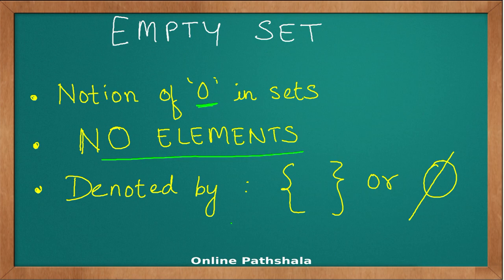And mathematically, in set theory, it is denoted by either having two curly braces without writing any element in between, or you use the symbol which is known as phi. Now these two are the common representations of an empty set.